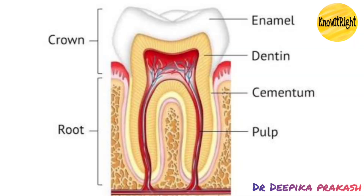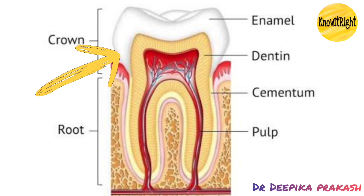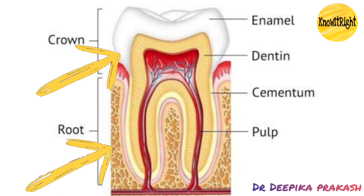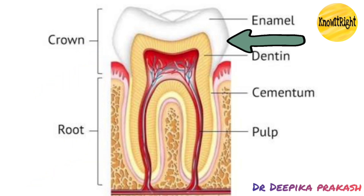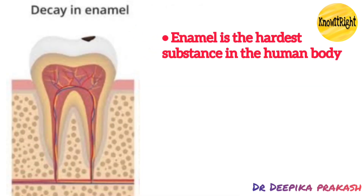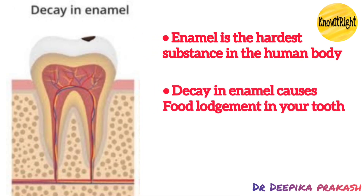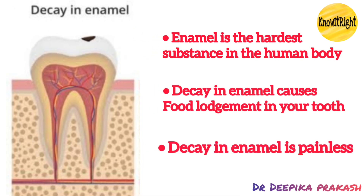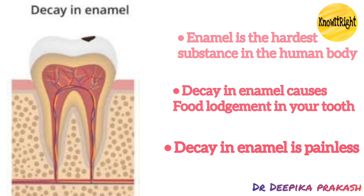The upper part of the tooth that you see in your mouth is the crown, and inside the bone is the root. The first layer is the enamel, which is white in color and is really strong. If this part of your tooth is decayed, you'll only notice food lodgment in that tooth but you don't feel any pain.